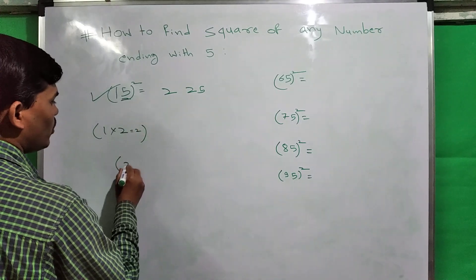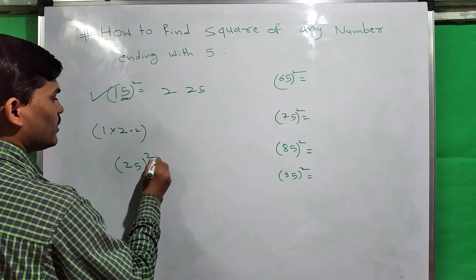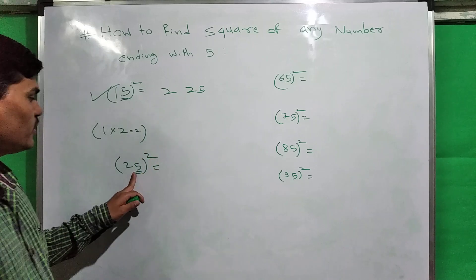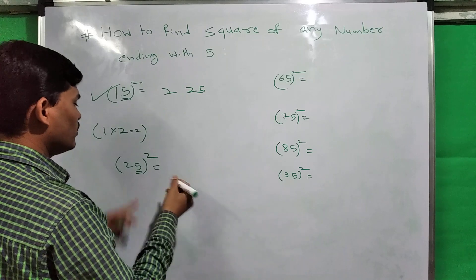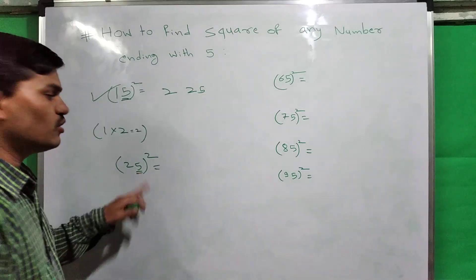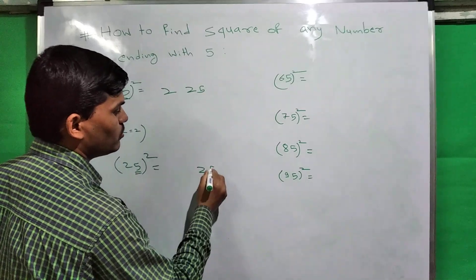Suppose we have to find the square of 25. Same step. Write down first the square of this unit digit, which is 5. The square of 5 is 25. Write down here first: 25.